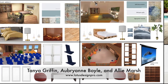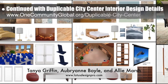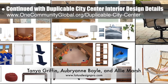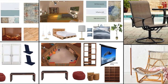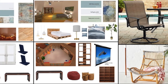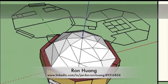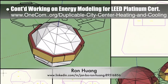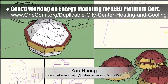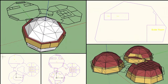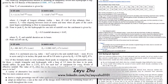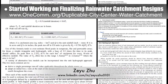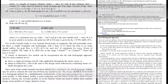Tanya Griffin, Aubrey Ann Boyle, and Allie Marsh, interior designers from Lotus Design Pros, completed their 21st week helping with the duplicable city center interior design details. This week's focus was outdoor grading and waiting area furniture for the social dome, art for the bedrooms, and paint, flooring, and furniture for the cupola. Ron Wang, mechanical engineer, also continued with a second week working on energy modeling for our LEED Platinum Certification and City Center open-source HVAC design tutorial — this week he finished modeling all the rooms and worked on repairing various surfaces. Zeyu Zhu, mechanical engineer, also joined the team and started working on rainwater catchment designs for the city center — this week he researched data on extreme rainfall events and various reservoirs.